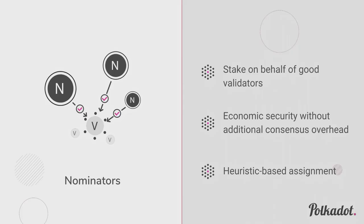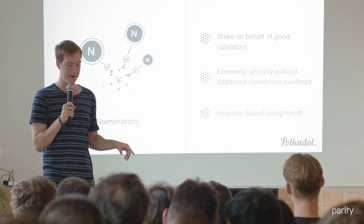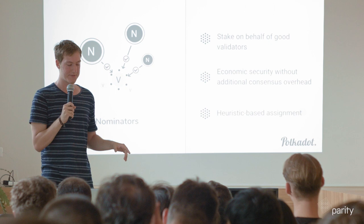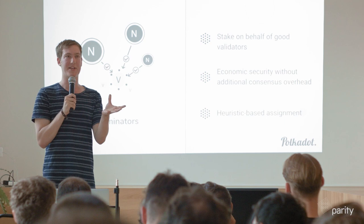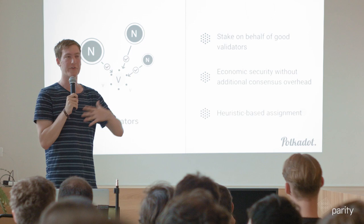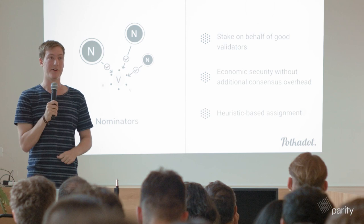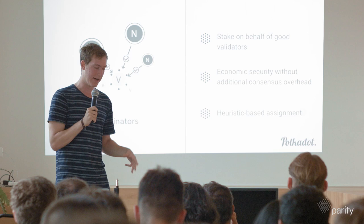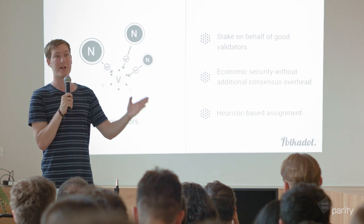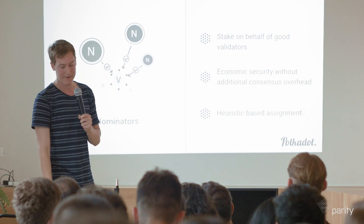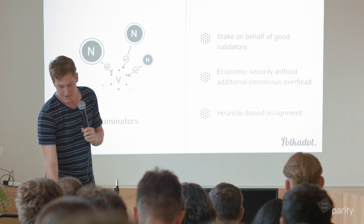Then we have nominators. They put up stake on behalf of good validators. There's a fundamental trade-off between economic security and decentralization: too few consensus participants means limited economic security; too many and the work grows with the square of that number. Nominators break out of this by allowing participants to say "I think this validator is good," put money on their behalf, and attach more economic security to that person. If the validator misbehaves, the nominators behind them also get slashed — creating a strong incentive to choose good validators.